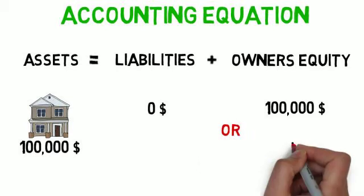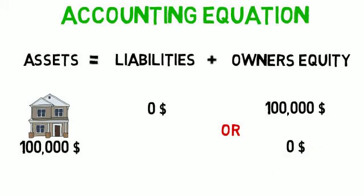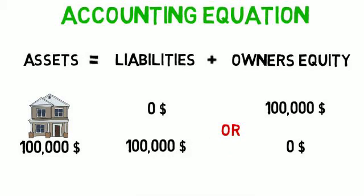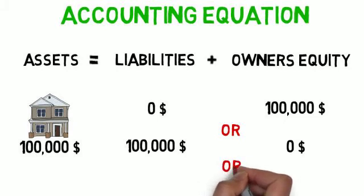If you don't have any money, you would need to borrow the whole amount, the full amount, from others. So the owners equity is zero — your contribution is zero. And your liabilities to be repaid back to others is $100,000, which is the full amount.